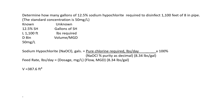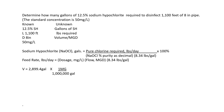We need that volume in gallons, so we convert: 387.6 cubic feet times 7.48 gallons per cubic foot — cubic feet cancel out — giving 2,899.4 gallons. But we need it in million gallons. One MG equals 1 million gallons, so we divide: gallons cancel out and we get 0.0029 million gallons. That's our volume, which we move to the known column.